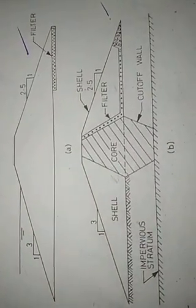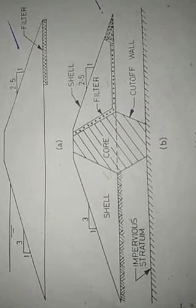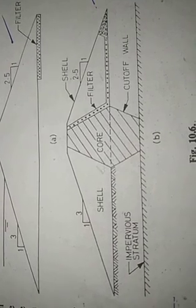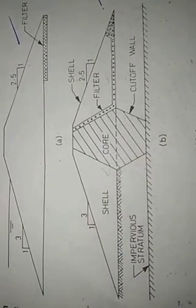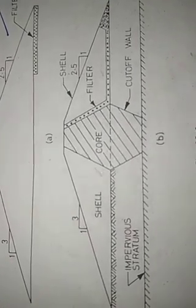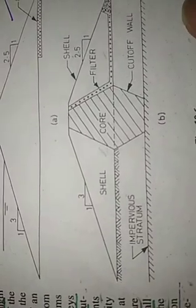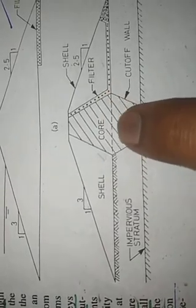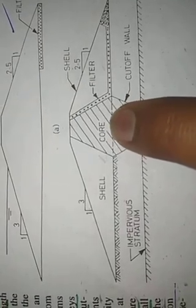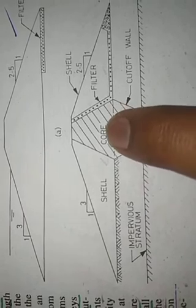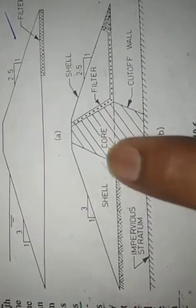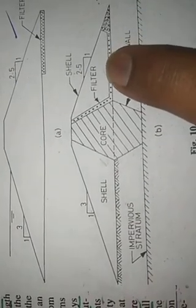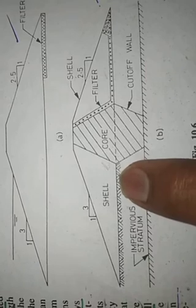Generally, earth dam can be divided into two types of zones: pervious zone and impervious zone. So this part between the shell on both sides is known as impervious zone or also known as core. On both sides, pervious zone is present in the form of earth material and this portion is known as shell.